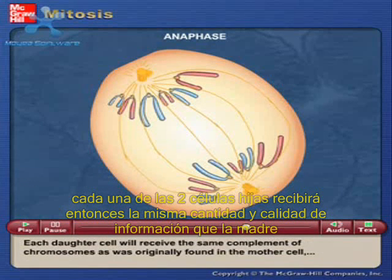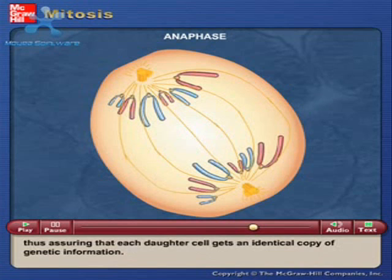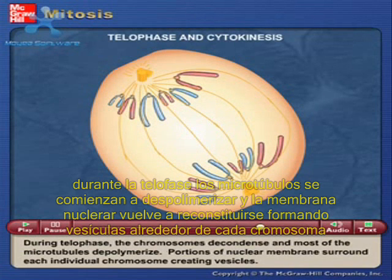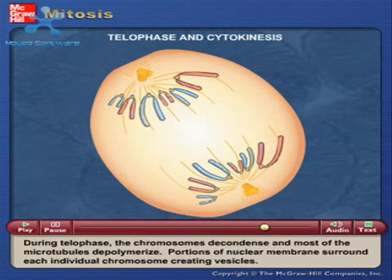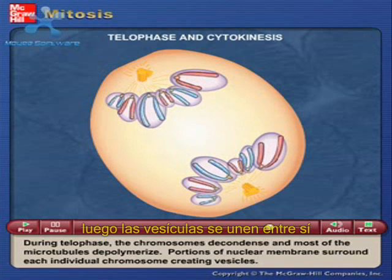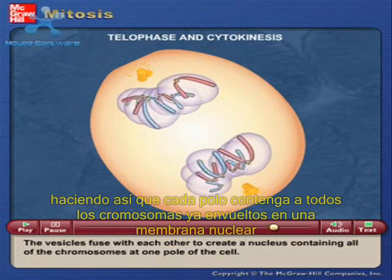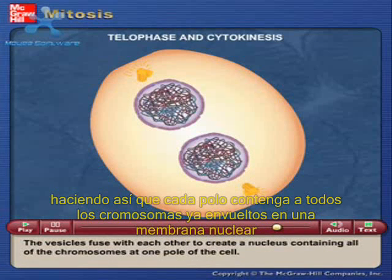Each daughter cell will receive the same complement of chromosomes as was originally found in the mother cell, thus assuring that each daughter cell gets an identical copy of genetic information. During telophase, the chromosomes decondense and most of the microtubules depolymerize. Portions of nuclear membranes surround each individual chromosome, creating vesicles. The vesicles fuse with each other to create a nucleus containing all of the chromosomes at one pole of the cell.